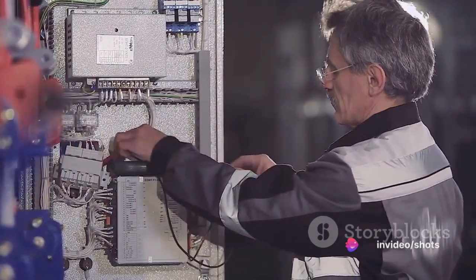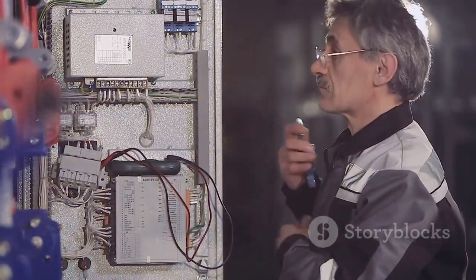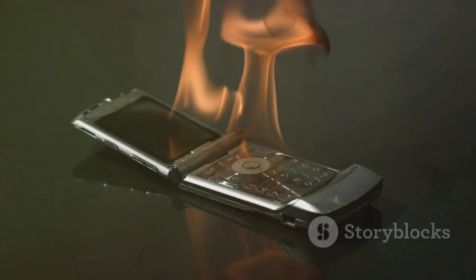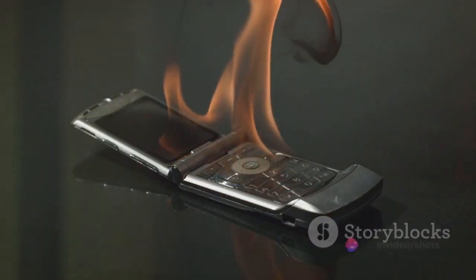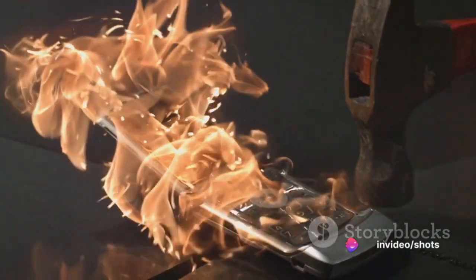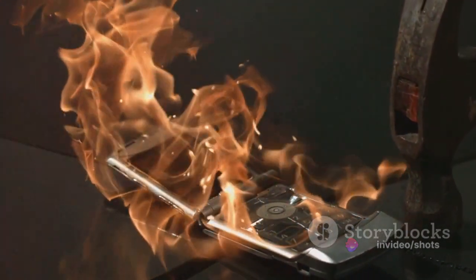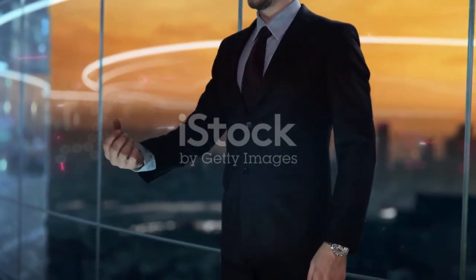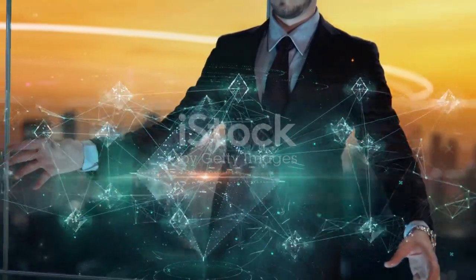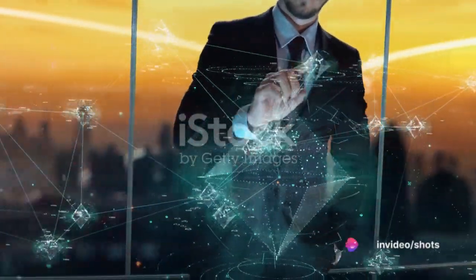The technocrats, the puppet masters of this new world, had their weaknesses. Their power depended on our compliance. Their smart meters, cell phones, and Wi-Fi, the very tools used to chain us, became our targets. By turning them off, we could disrupt their control. This was no easy path. It meant going against the tide, rejecting the digital world they were creating.